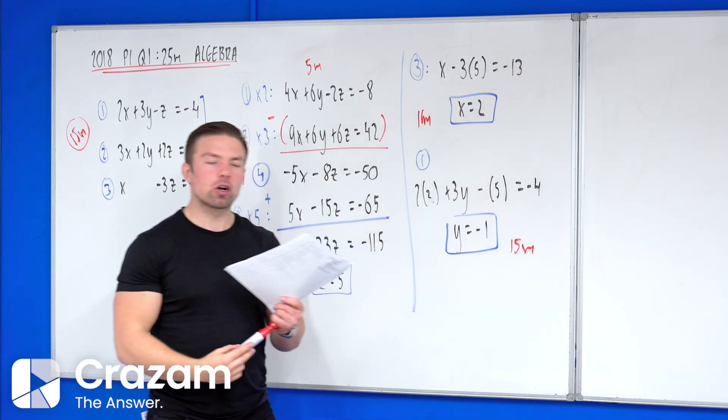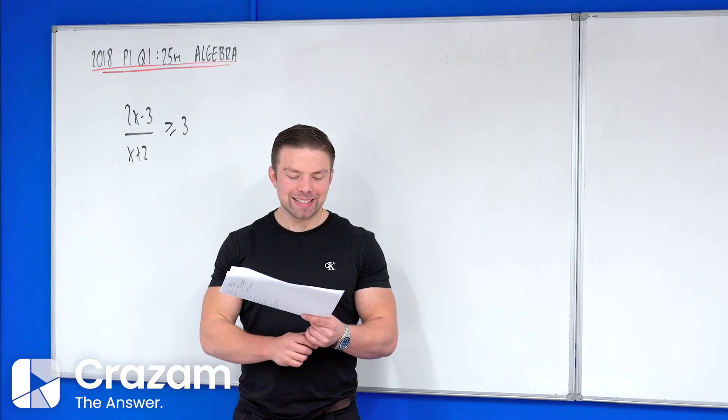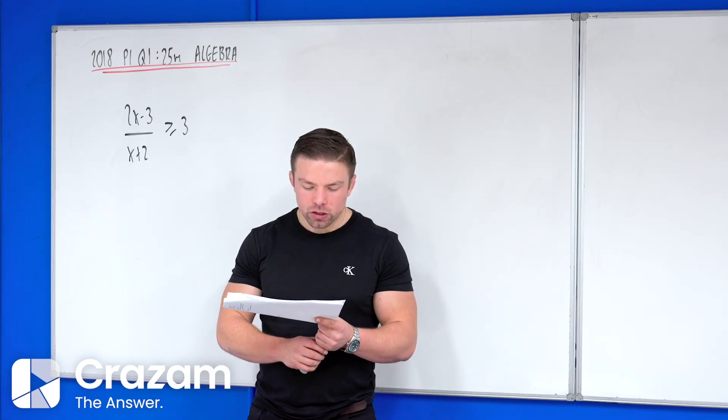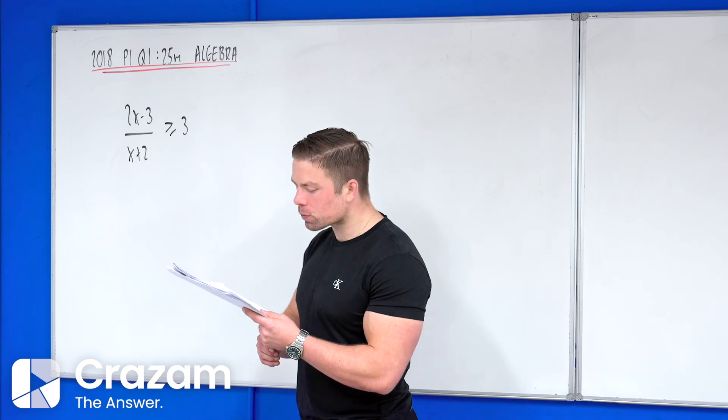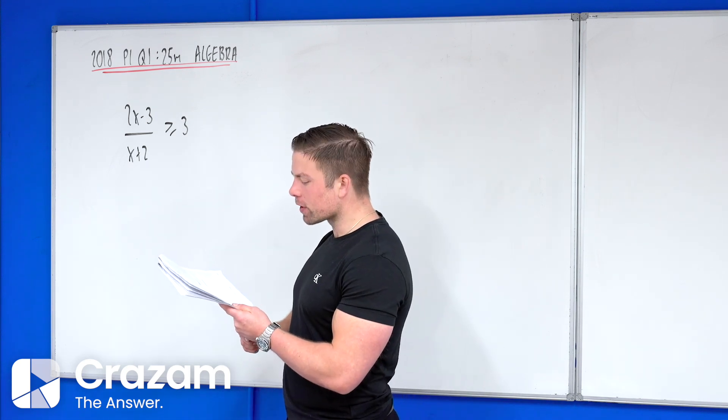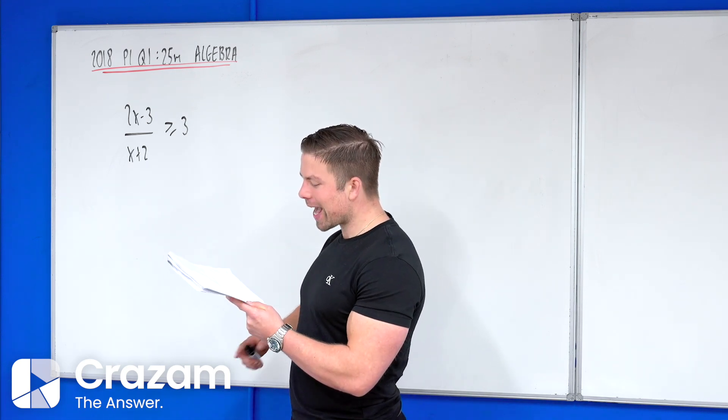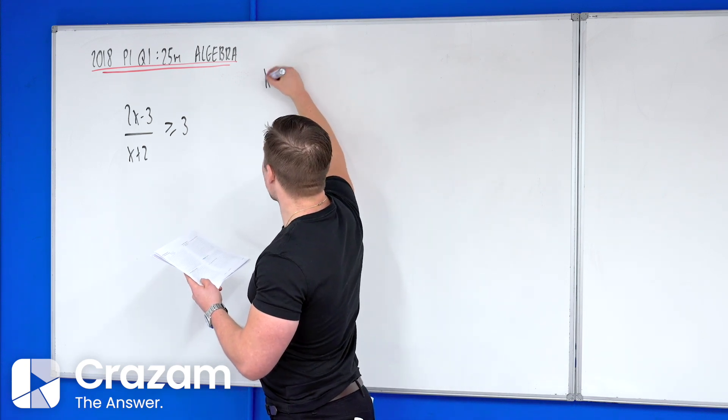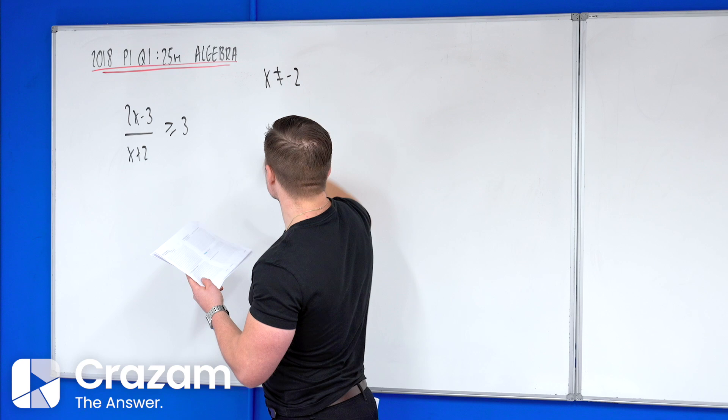Part B is an algebra question and it says solve the inequality 2x minus 3 over x plus 2 is greater than or equal to 3. It says x is an element of R, but crucially I would underline that x is not equal to minus 2.